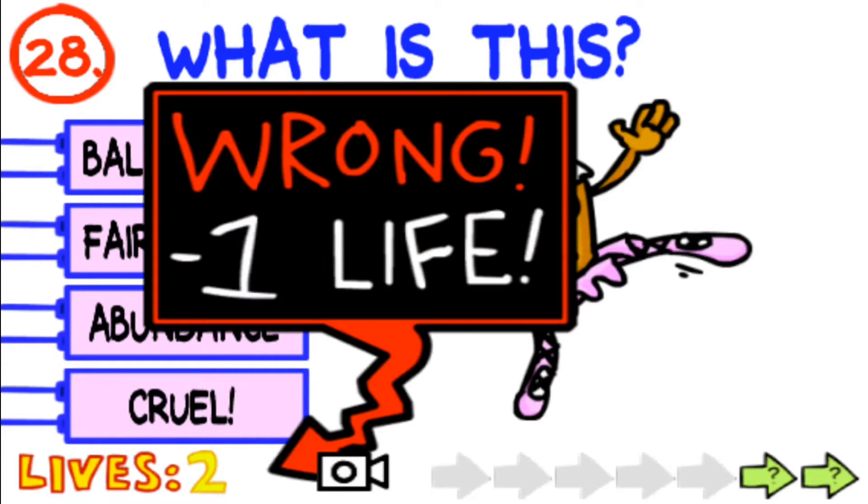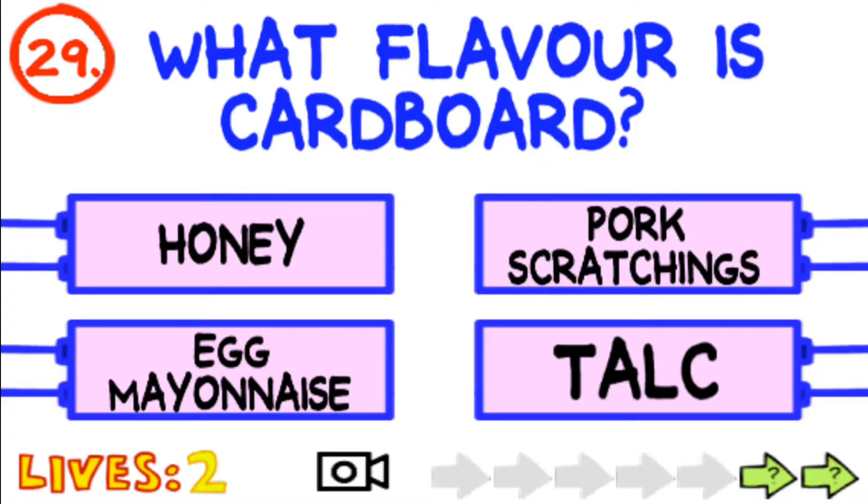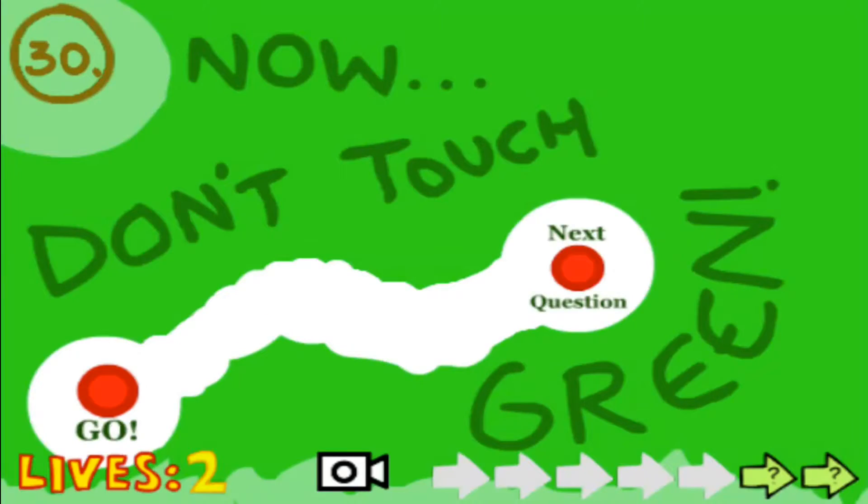Is it cruel? An abundance. Okay, it's an abundance. What flavor is cardboard? Egg mayonnaise. Put your finger on here. Don't touch green. Oh, I did it.